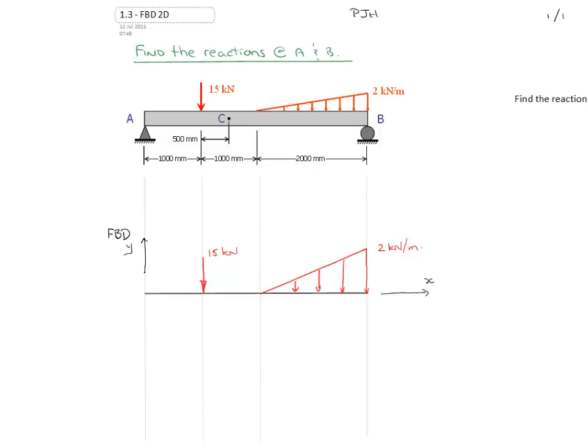Now for some texts they might suggest that the distributed loads be replaced by their equivalent point load, and that allows for some simplicity in calculations later on. Now while this is technically correct, there is some risk associated with doing this, particularly if you're going to start doing a partial free body diagram later. If you don't recognize that you've replaced the distributed load with an equivalent point load, you might make a mistake at that point.